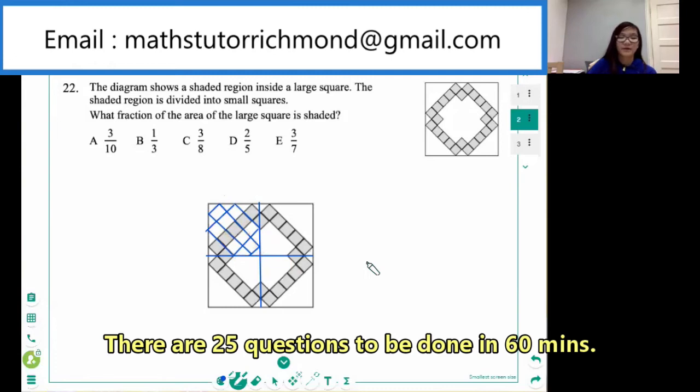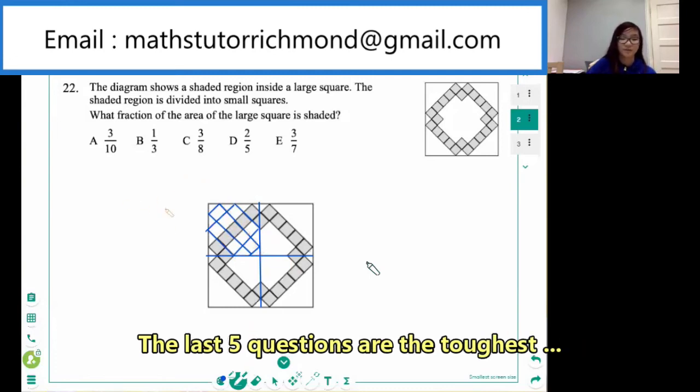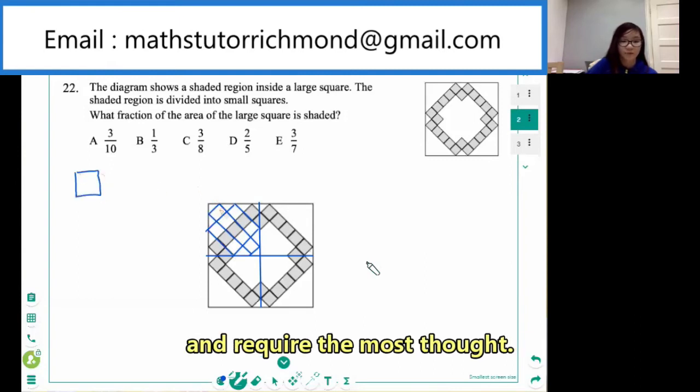Now that we have this, we can count the number of squares within the quarter. The whole squares, we have one, three, five, three, and one, which adds up to 13.